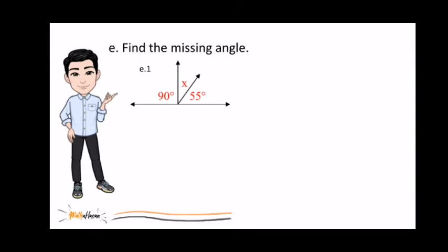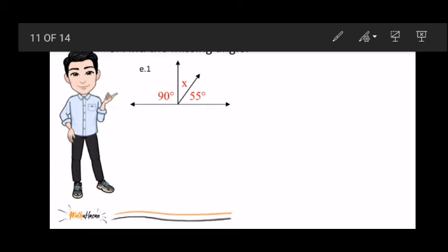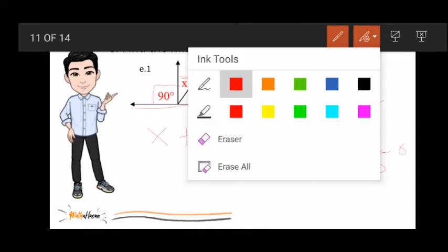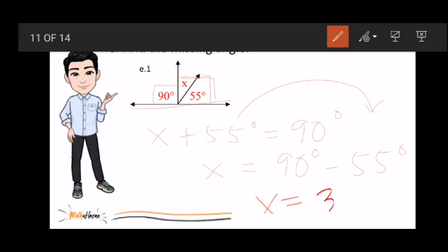In this problem, we need to find the missing value of x. Para magawa natin yun, dapat i-observe natin mabuti yung given natin. So, kung makikita nyo dito sa given natin, yung kabilang side ay 90 degrees na. Ngayon, kung 90 degrees ito, malamang itong kabilang side na ito ay 90 degrees din. Dahil ito ay straight angle. Okay? So, ibig sabihin kung 90 degrees ito, pwede natin sabihin na yung sum ng x at ng 55 degrees ay equal sa 90 degrees. And to solve for x, we just need to transpose the value 55 degrees on the other side of equation. So, that x is equal to 90 degrees minus 55 degrees. So, the value of x is 35 degrees.